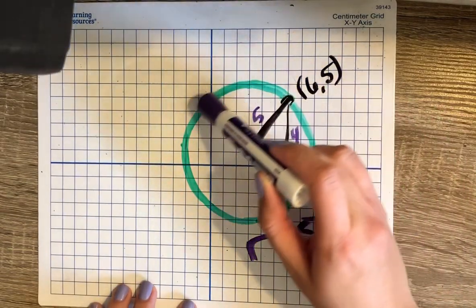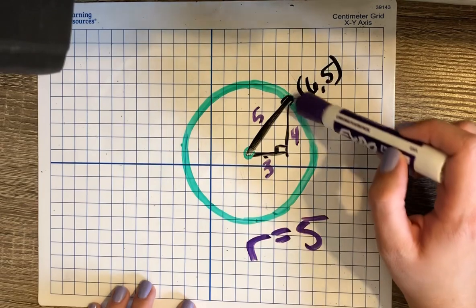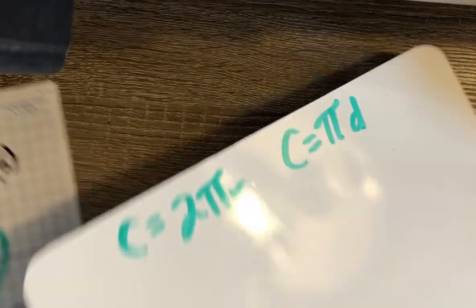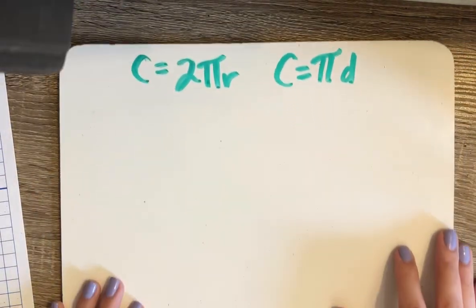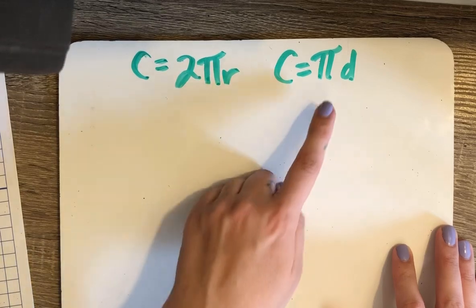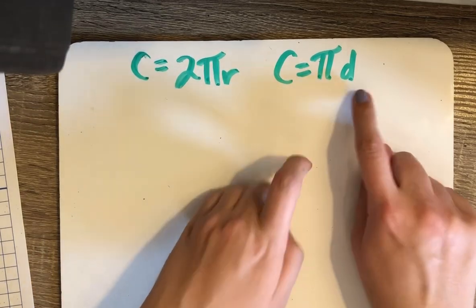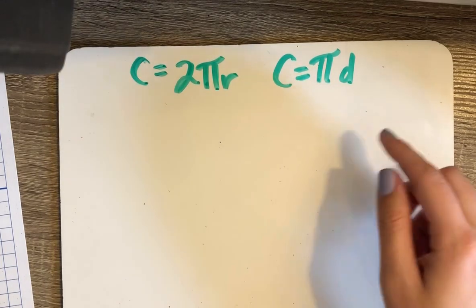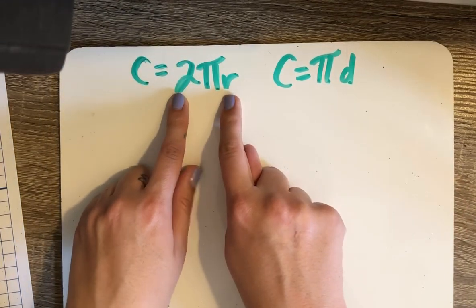Circumference means the distance around the circle; it's similar to the perimeter of a polygon. There are two different formulas for circumference: one is 2πr, the other formula is πd. D represents the diameter.